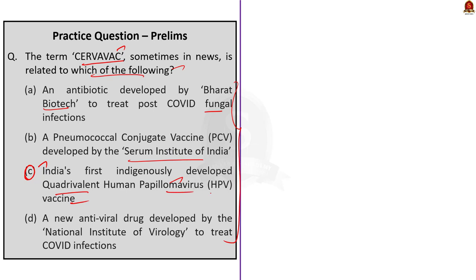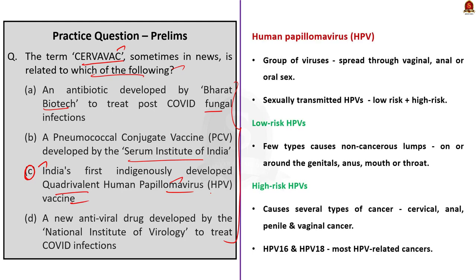Cervavac is a vaccine. Human papillomavirus, shortly called HPV, refers to a very common group of viruses. HPV is a common infection and spreads through vaginal, anal, or oral sex. Sexually transmitted HPV falls into two groups: low risk and high risk HPVs. Low risk HPVs mostly do not cause disease; however, a few can cause non-cancerous lumps on or around the genitals, anus, mouth, or throat.